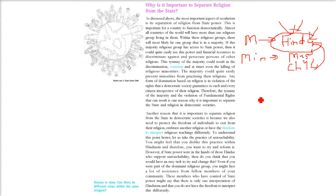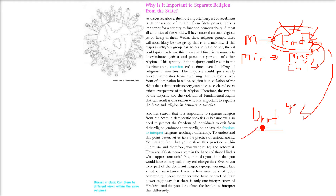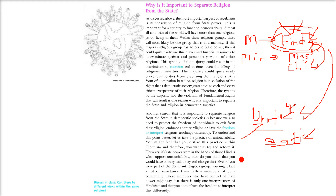For example, untouchability was there. People from within the community might not have thought that untouchability or Sati Pratha was bad. But Raja Ram Mohan Roy, who followed Hindu Dharma, thought these were not good — they were actually a disbelief. So individuals can interpret their religion in their own way. They can face resistance from their own fellow members, but the state says that interpretation of one's own religion is allowed.